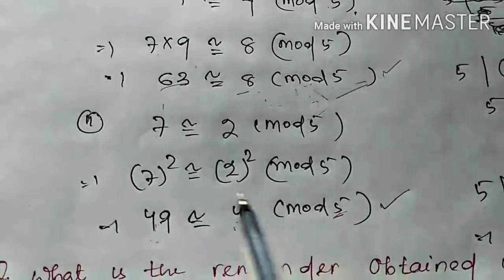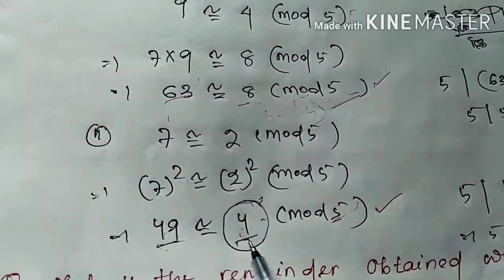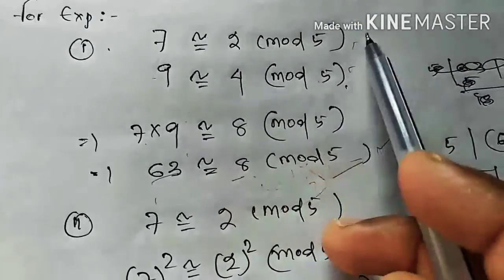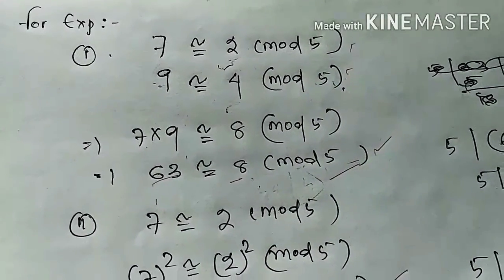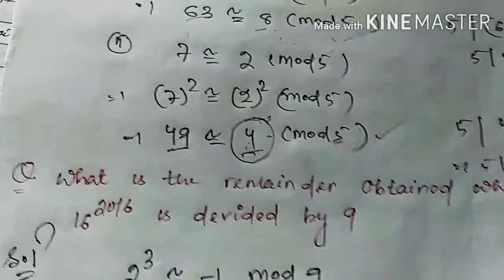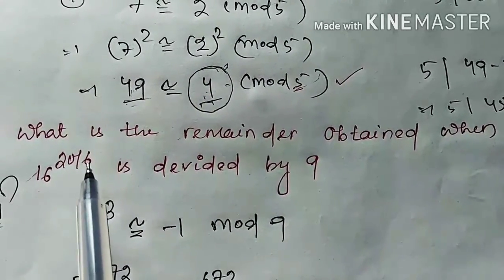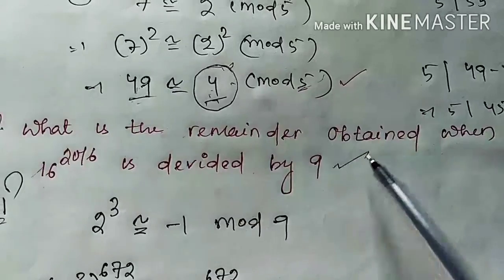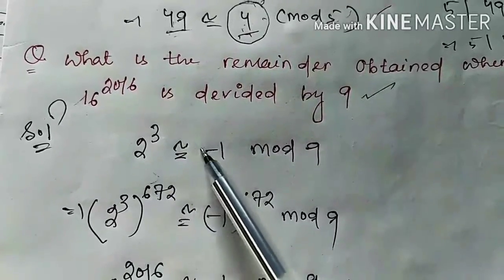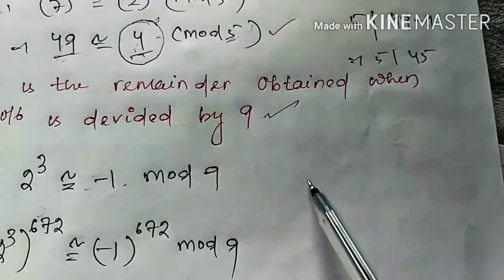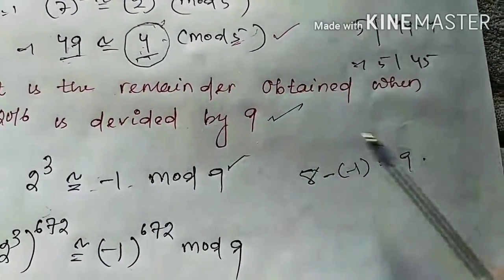Basically, the congruent value is always the remainder. When 49 is divided by 5 it gives remainder 4; when 7 is divided by 5 it gives remainder 2; when 9 is divided by 5 it gives remainder 4. Using this concept, here is a problem: what is the remainder obtained when 16 to the power 2016 is divided by 9? We know that 2 cubed is 8, and 8 is congruent to minus 1 mod 9 because 8 minus (minus 1) is 9, which is divisible by 9.